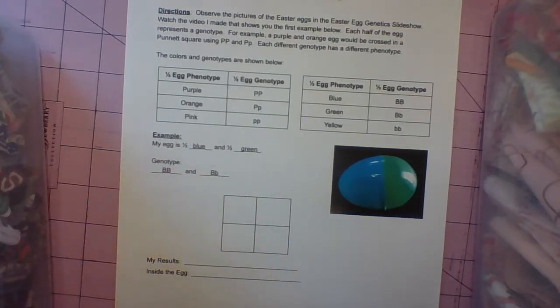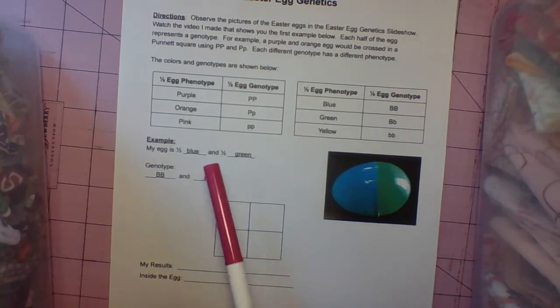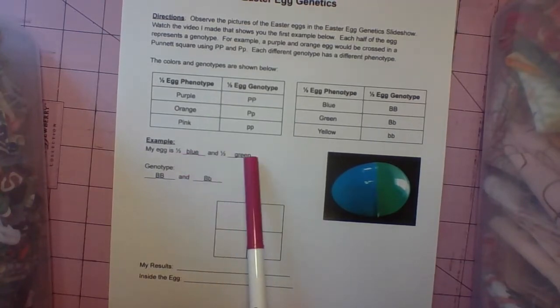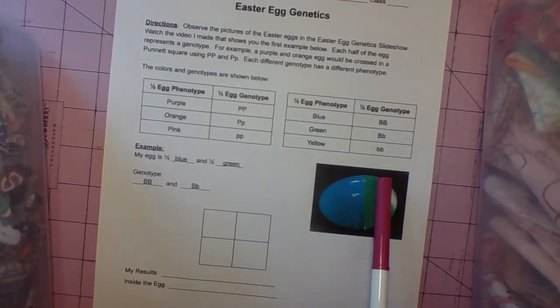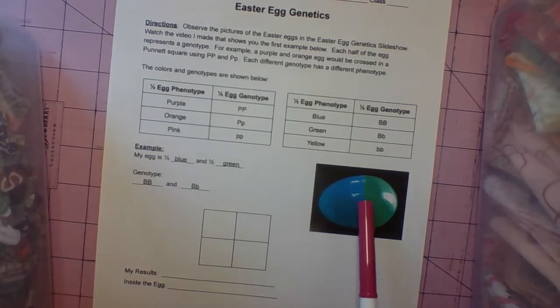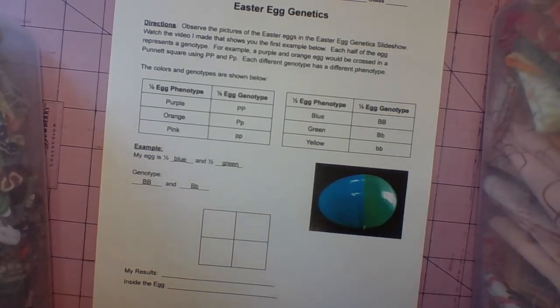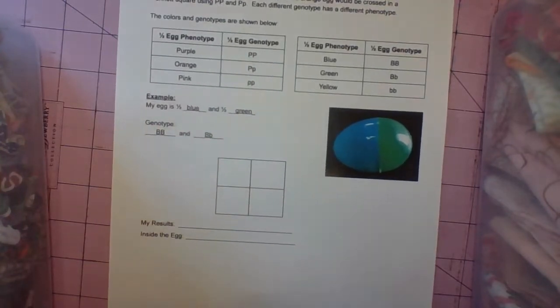We're going to first cross these in the Punnett square. Your first step with each of the practice problems is you simply type in the colors, the possibilities. They could be all orange or all pink or half purple, half pink. You really have to look at those colors and match them up with the genotypes. Let's do this example, though.